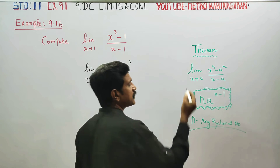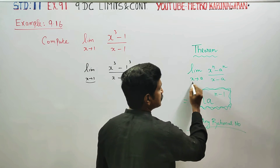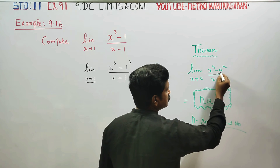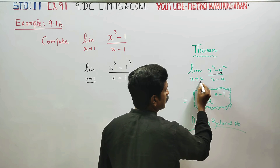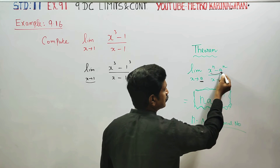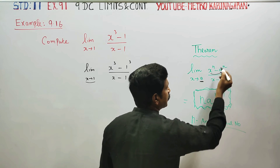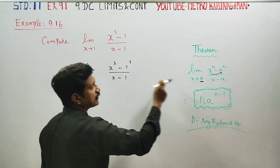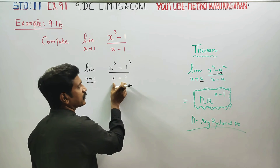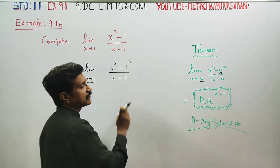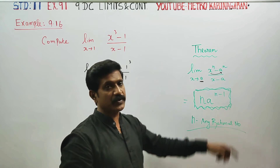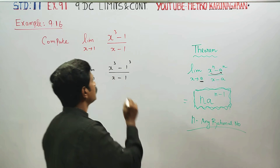The theorem is: when x turns to a, the limit of x power n minus a power n by x minus a — this is the approaching value — equals n into a power n minus 1. That is the ready-made formula.